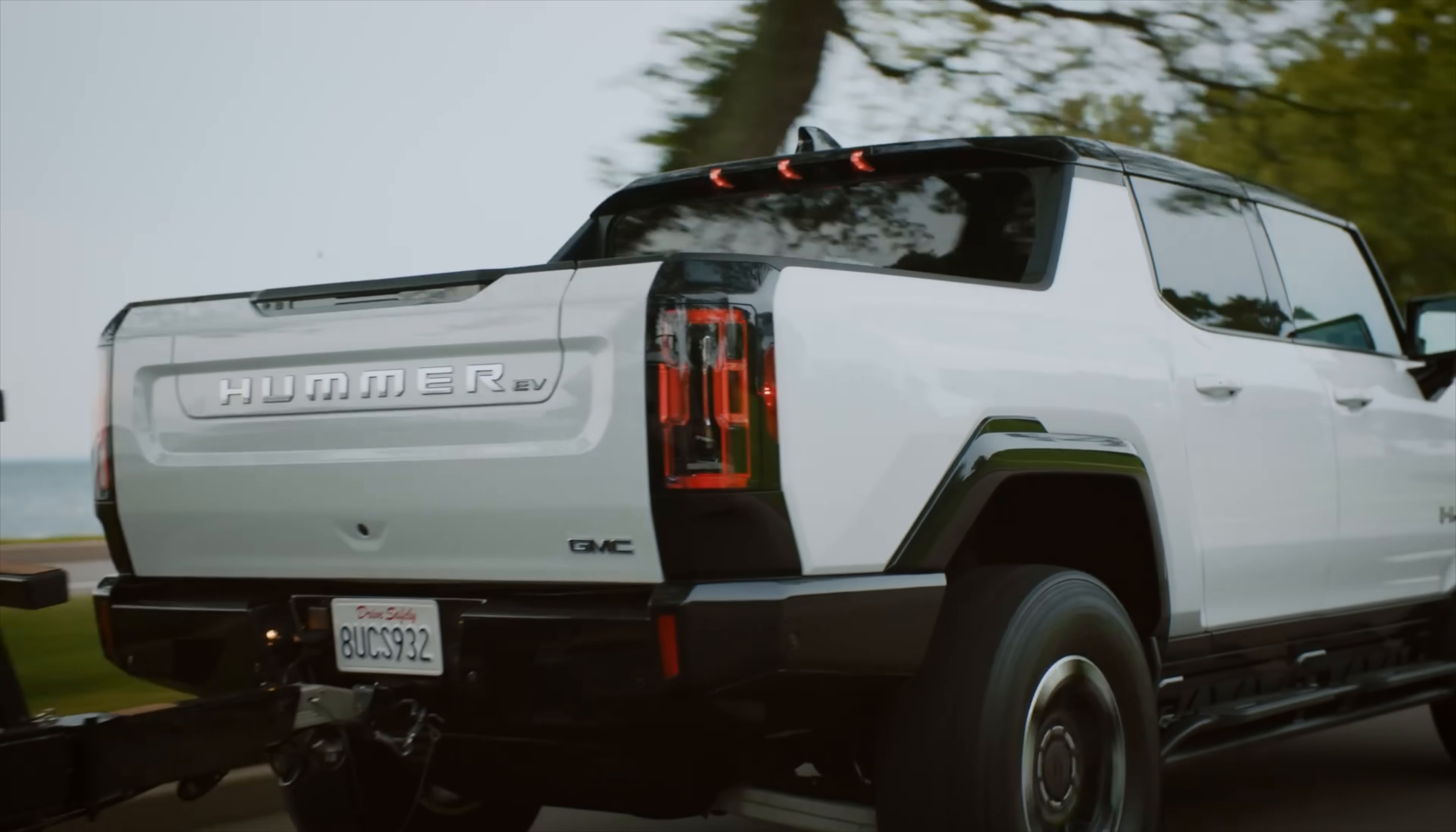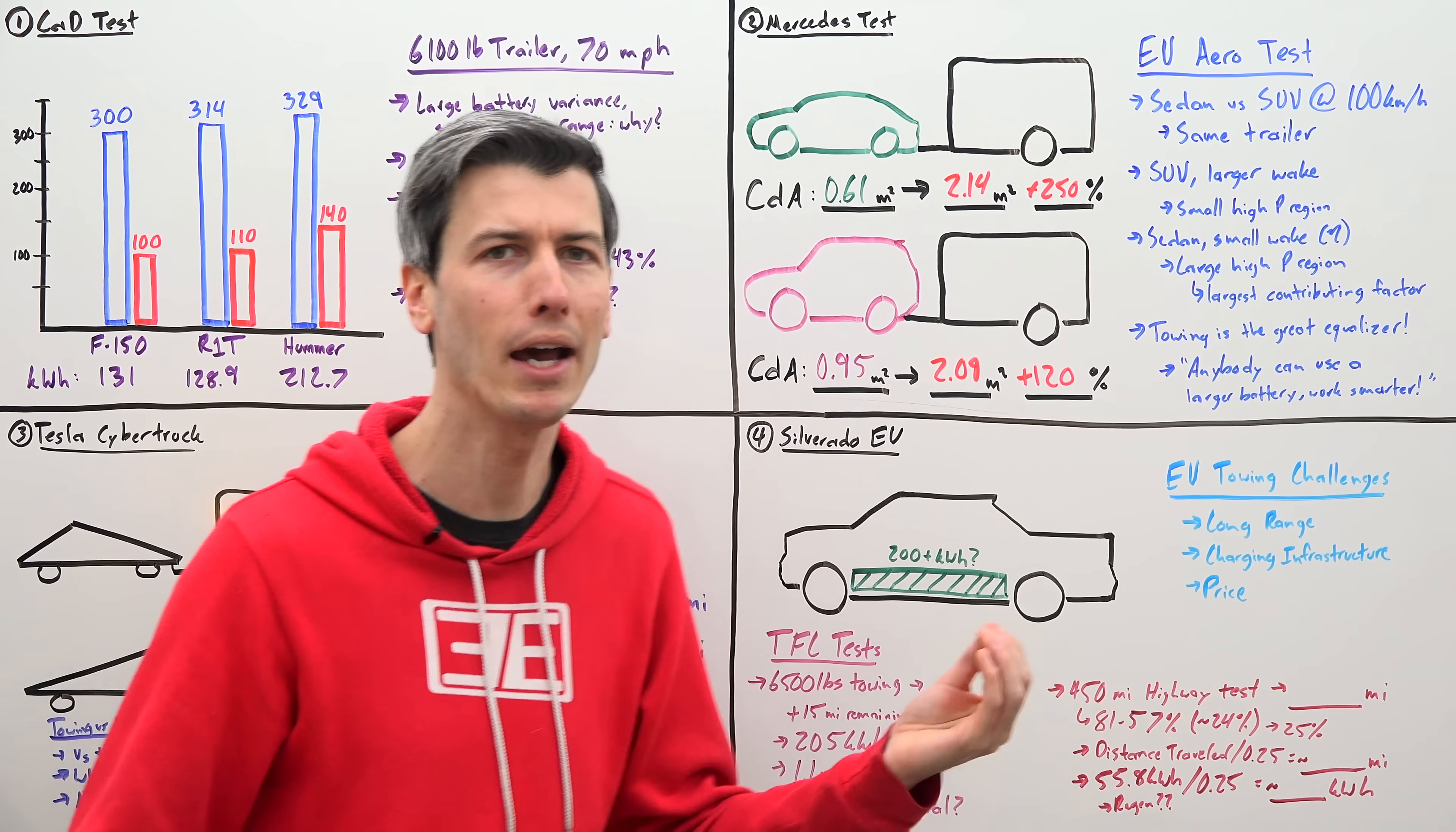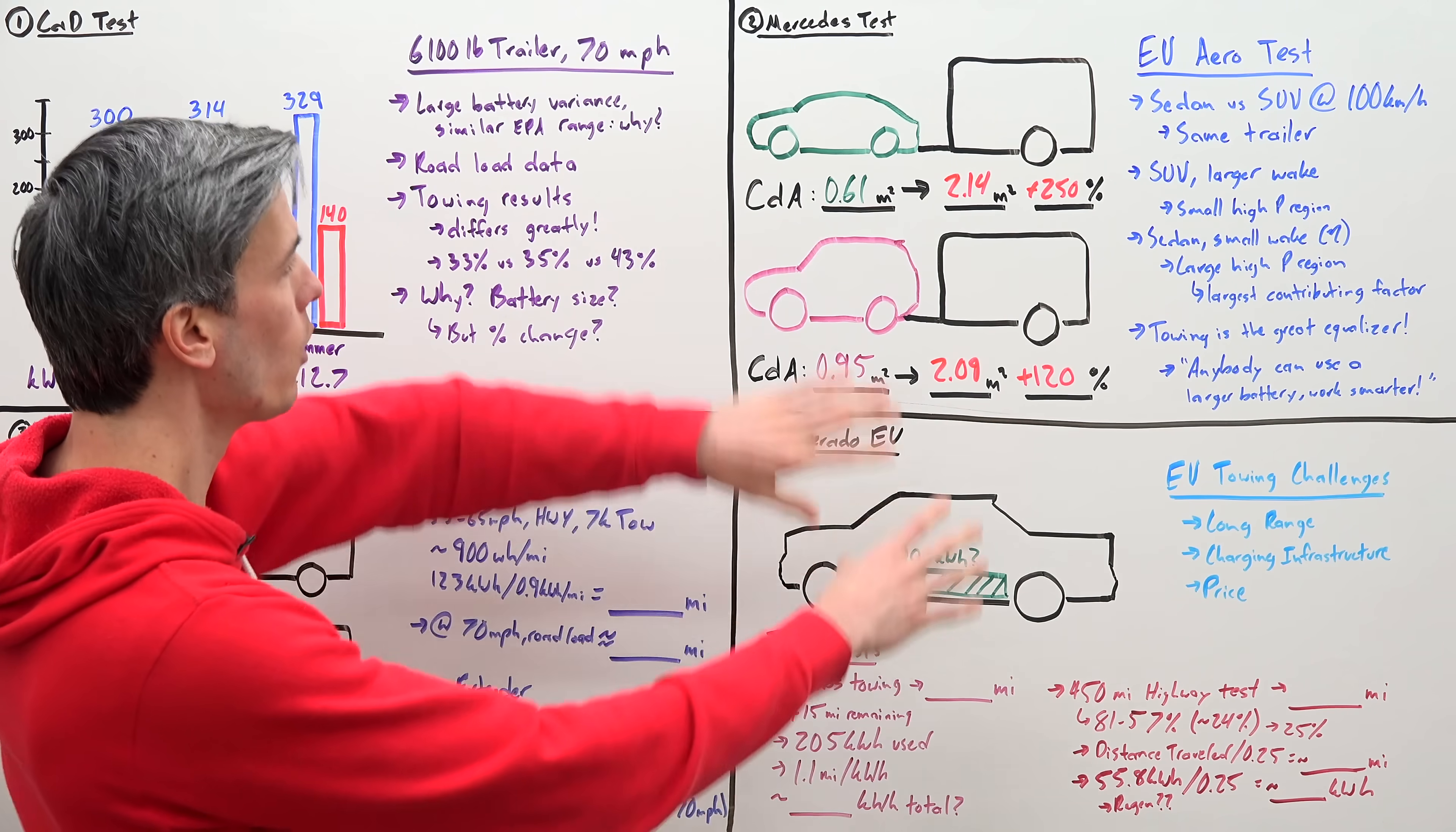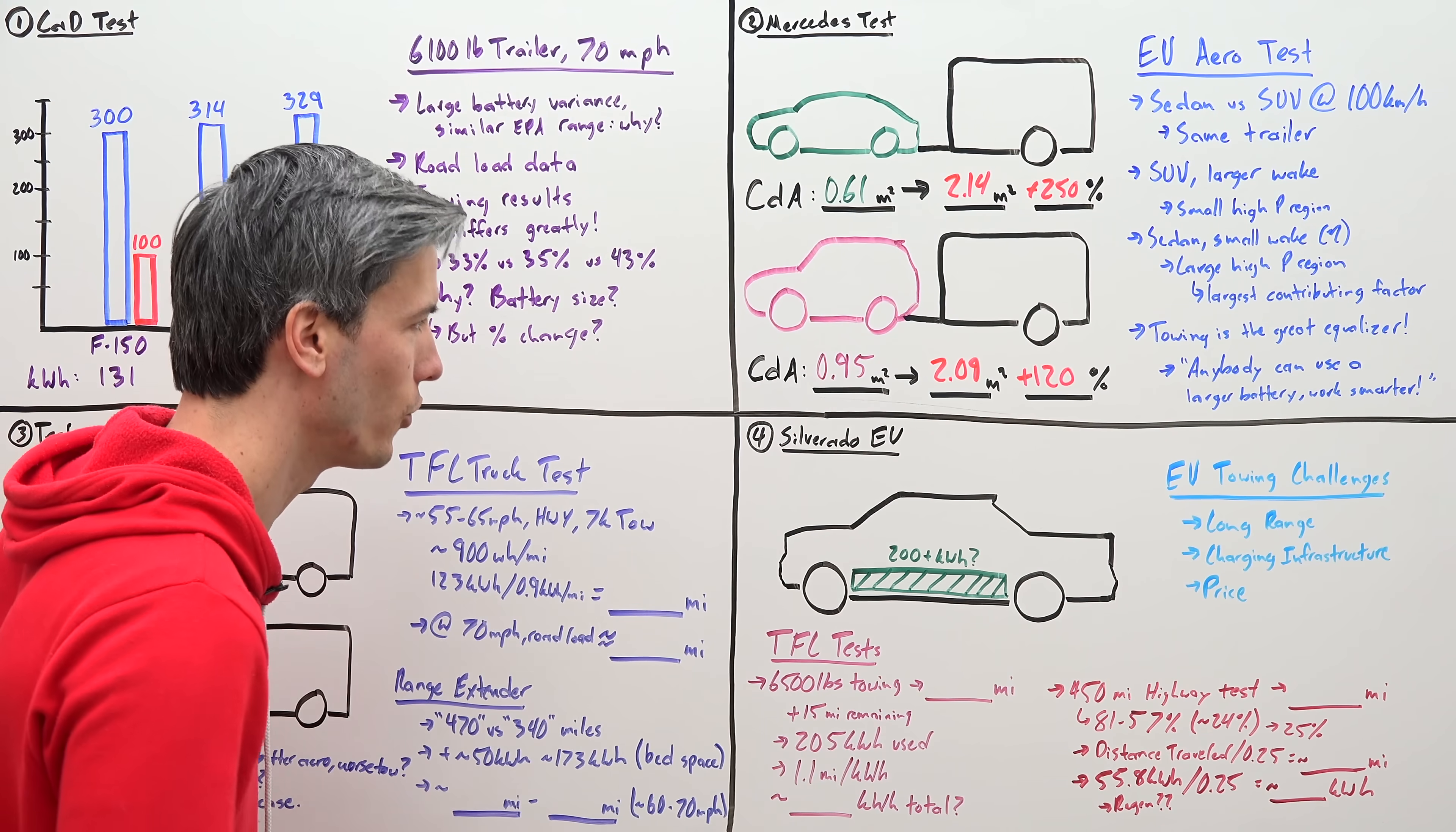What this demonstrates is that towing is the great equalizer. Maybe you created a really aerodynamic vehicle, but once you start towing, you're at the mercy of that trailer as far as aerodynamic losses. So you've probably heard electric car companies say things like, anybody can use a larger battery. We like to work smarter, meaning creating a very efficient aerodynamic vehicle so that you don't need a massive battery. Now that's absolutely true when it comes to a vehicle on its own. But once you start towing, it is all about the size of the battery.